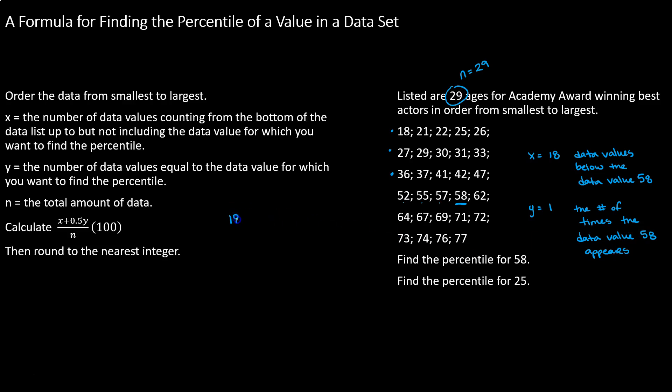We need 18 for x plus 1 for y and 29 for n, all of that multiplied by 100 to convert it into a percent. Now we can do a little bit of simplifying here. I know 1 half times 1 is still 1 half and if I add that to 18 that's just 18 and a half. So I have 18 and a half divided by 29 then multiplied by 100.